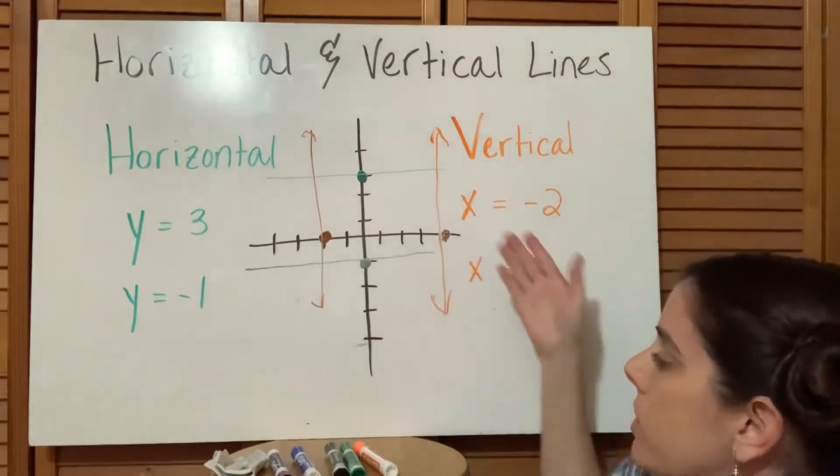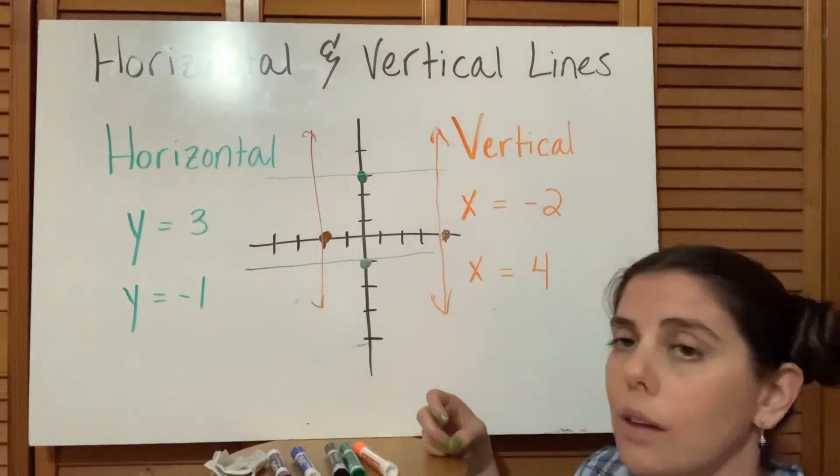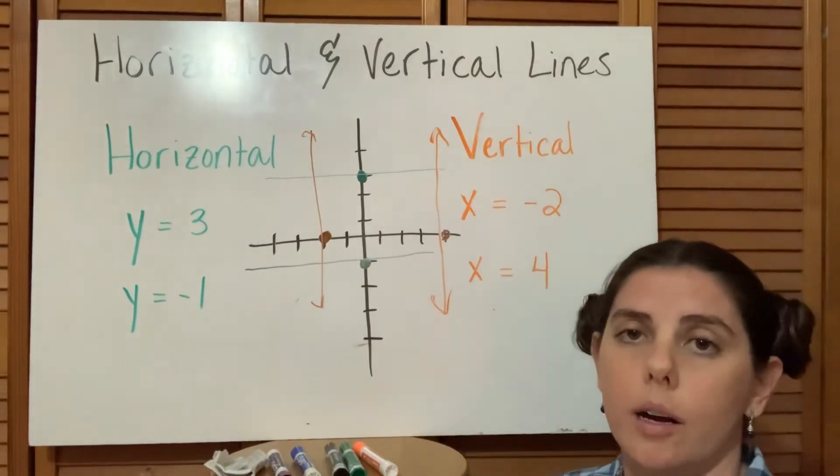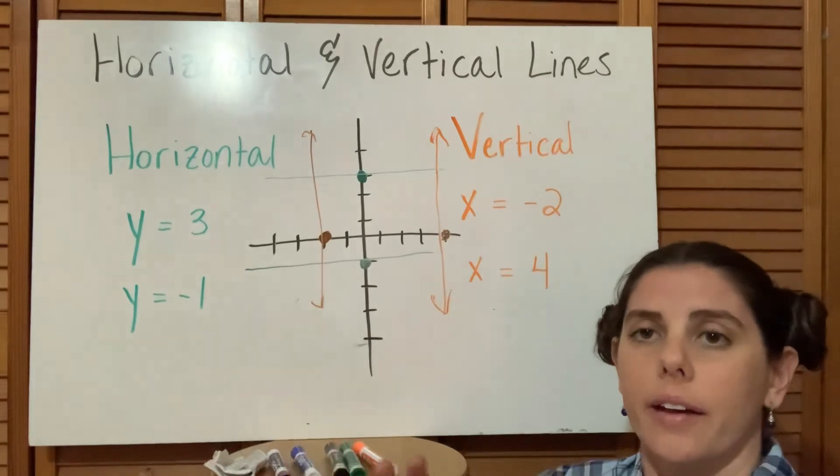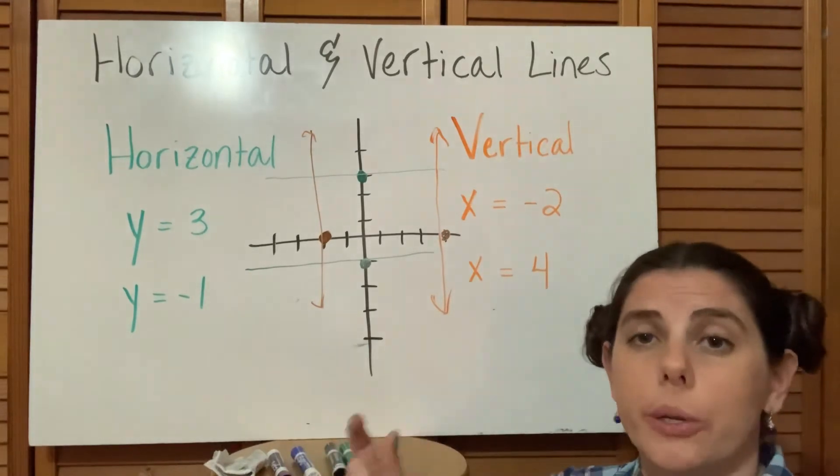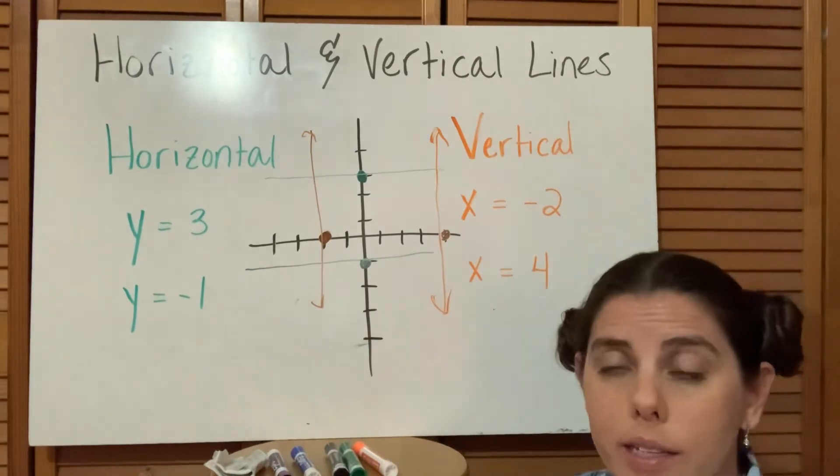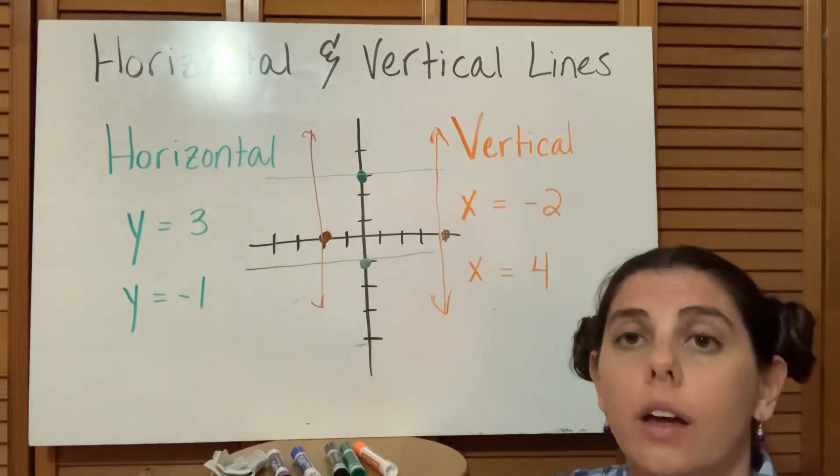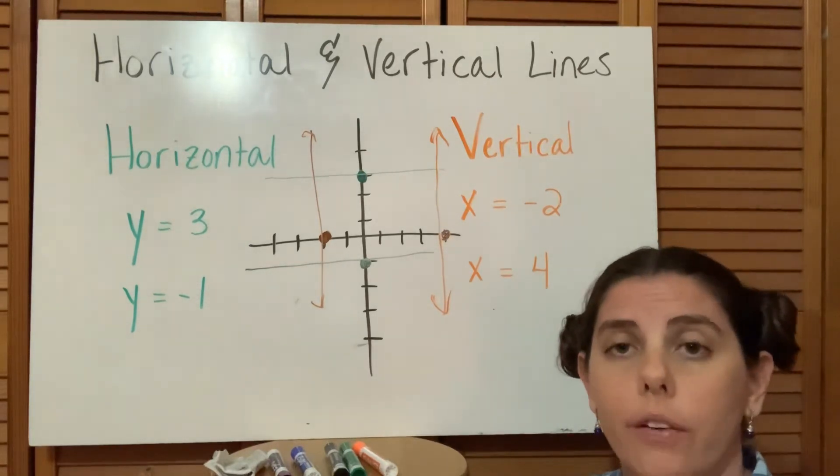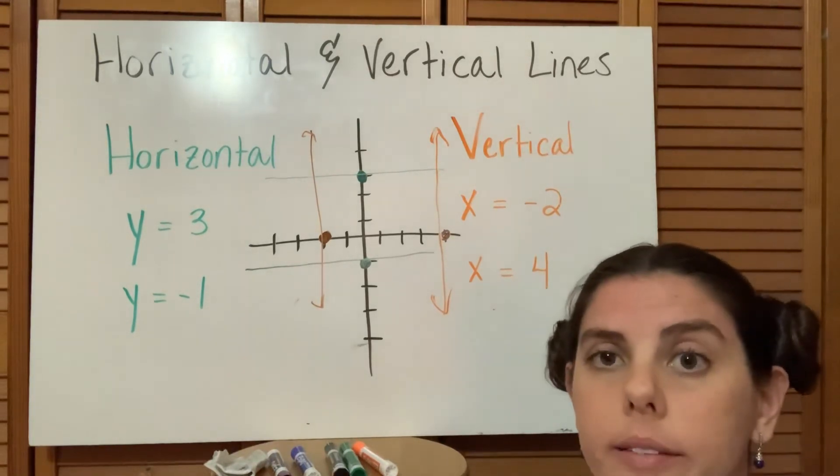We do want to understand that when we see an equation that's super simple like this, it is representing something that we can graph. In these instances, we're just going to be graphing a vertical and a horizontal line.